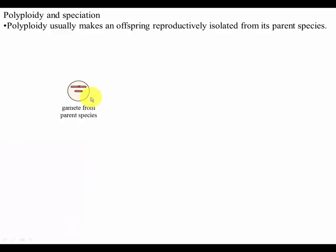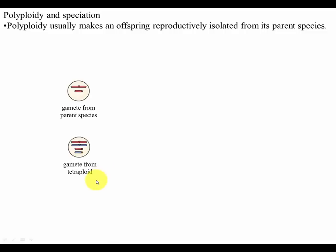Here's the parent species — it's diploid. When it forms a gamete, you've basically got one copy of each of the two chromosomes. We're keeping it simple and just saying there are two chromosomes in this species. Here's what you get when the tetraploid forms gametes: instead of having one copy of each chromosome, it's passing on two.